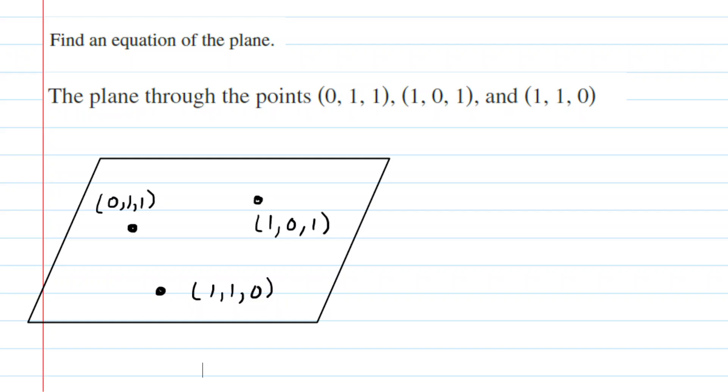We have a plane and we are given three points on the plane and we need to come up with the equation of that plane. Now this is not drawn to scale, of course, but for the purposes of finding the equation, what we want to do is draw a vector through two of the points. So for example, we could extend a line passing through these two points and we could call that vector A.